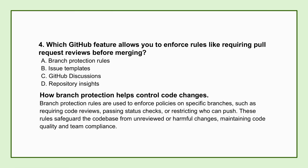Once pull requests start coming in, especially on bigger projects, how do you enforce quality and make sure only well-reviewed, solid code actually gets merged? That's where branch protection rules come into play. Repository admins can use these rules to enforce requirements like mandatory PR reviews, needing multiple approvals, or requiring automated tests to pass — all before any code can be merged into a critical branch like main. It's about building a safety net, ensuring consistency, and preventing regressions. Absolutely vital in professional development.